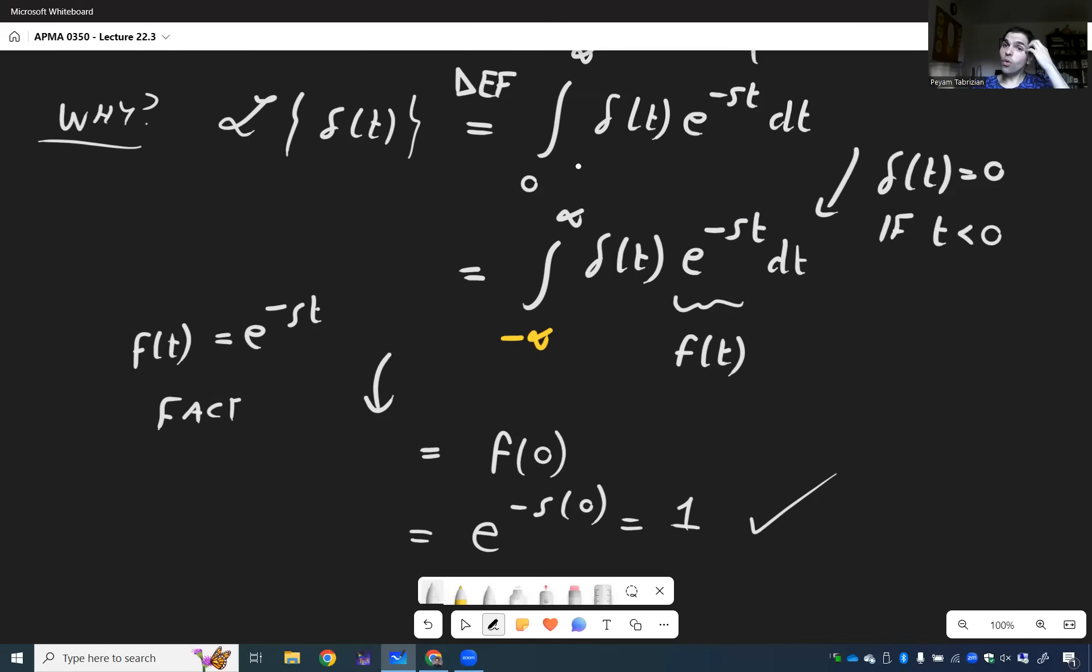So the only new thing we really need to know from today is that the Laplace transform of the Dirac delta is one.